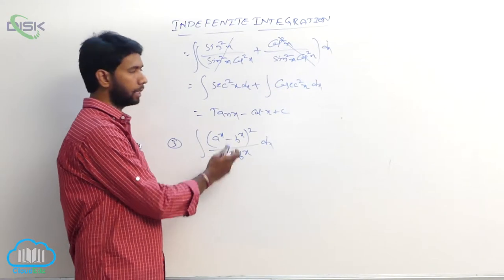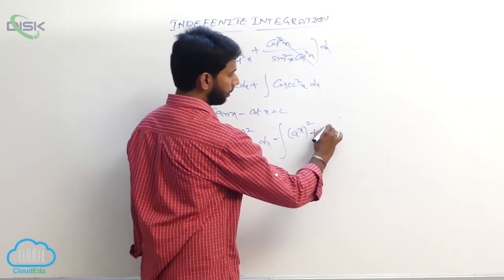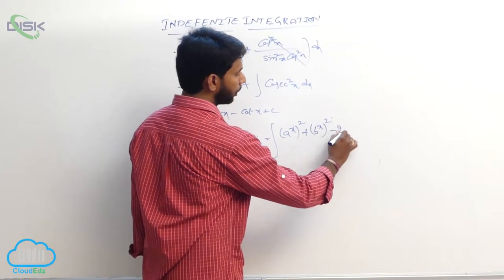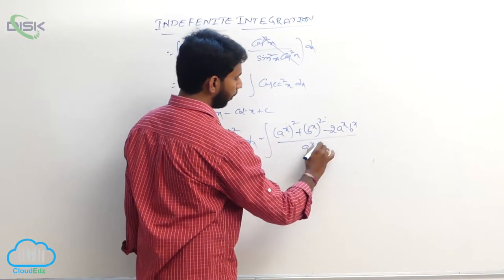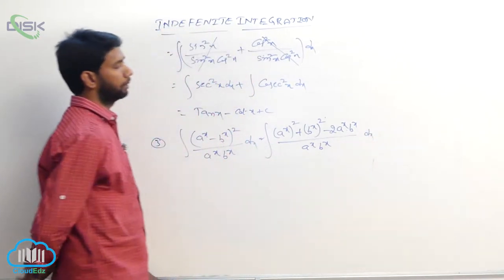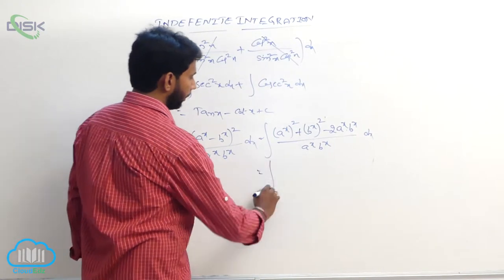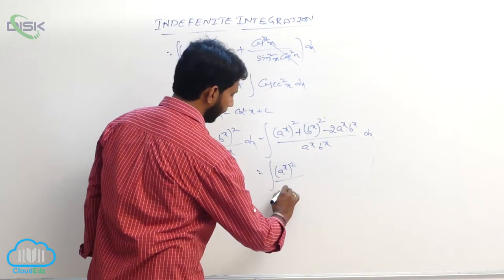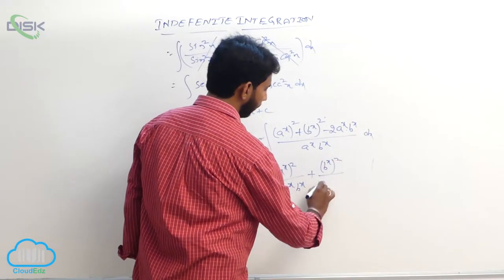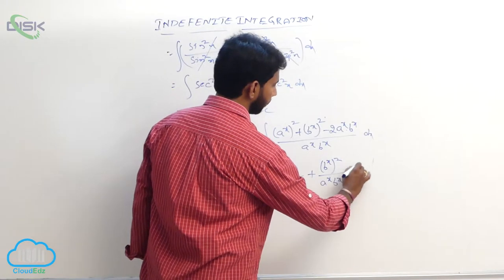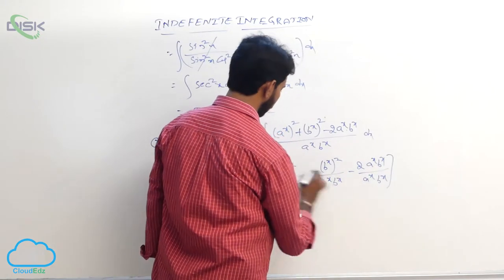First, expand the numerator (aˣ - bˣ)²: this gives (aˣ)² + (bˣ)² minus 2aˣbˣ. Dividing by aˣbˣ and separating terms: (aˣ)²/(aˣbˣ) plus (bˣ)²/(aˣbˣ) minus 2aˣbˣ/(aˣbˣ) dx.